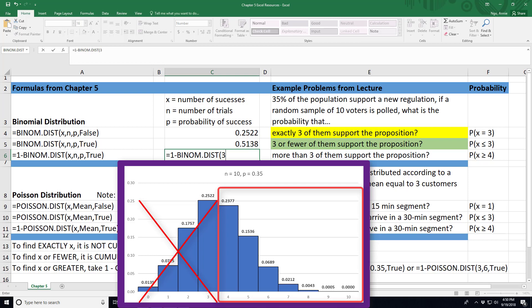So that's why I'm going to type in 3 for my number of successes. My trials are still 10 and my probability is still 0.35.